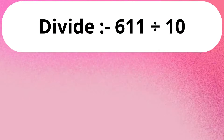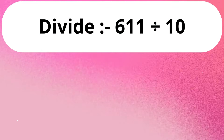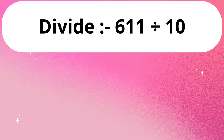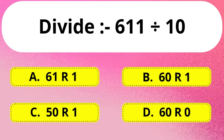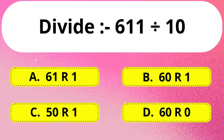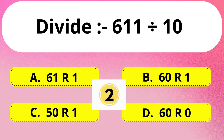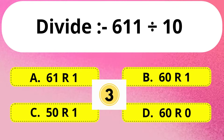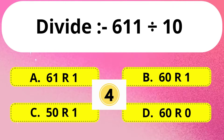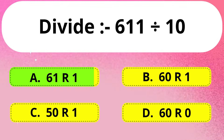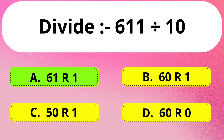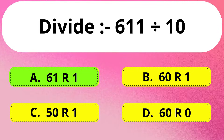Next question. Divide 611 divided by 10. Correct answer is Option A: 61 as the quotient, remainder will be 1.